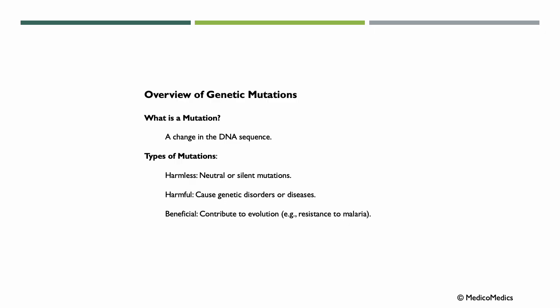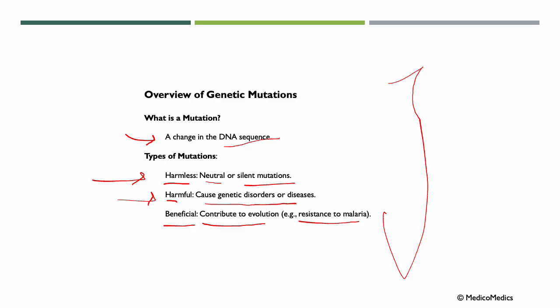What is a mutation? A mutation is a change in the DNA sequence, and there are different types. We have harmless mutations, so neutral or silent mutations. We have harmful mutations — these cause genetic disorders or diseases. We even have beneficial mutations; these contribute to, for example, evolution, like resistance to malaria. So mutations are changes in your DNA: some don't matter, some cause problems, and some can even be helpful.